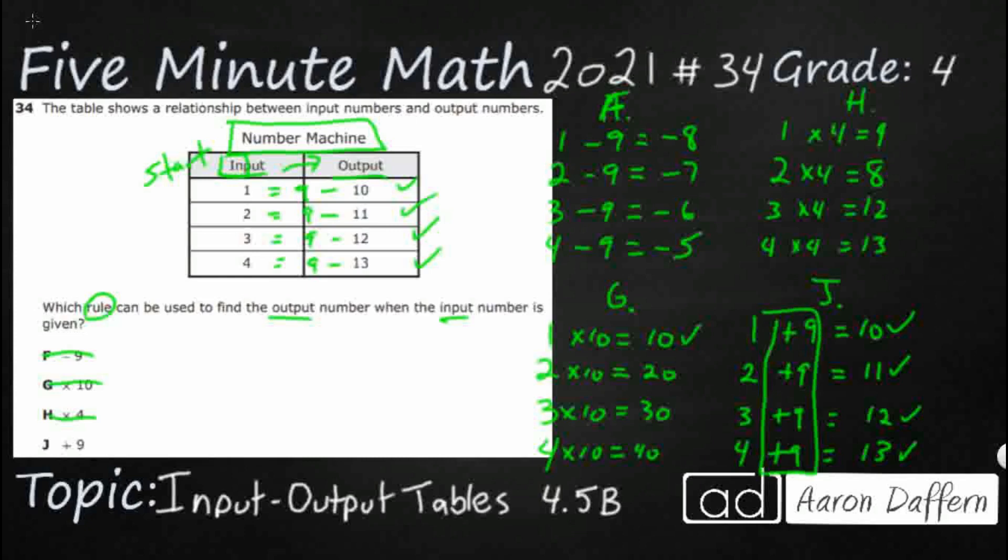So this works instead of a minus 9. Let's just make this a plus 9. And that is our rule of plus 9. We finally figured it out. Our answer here is going to be J plus 9.